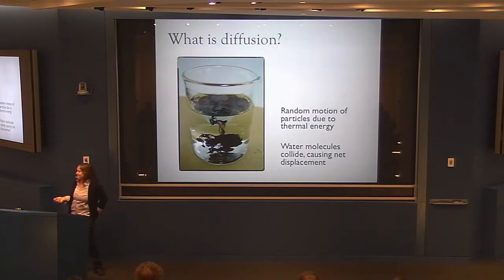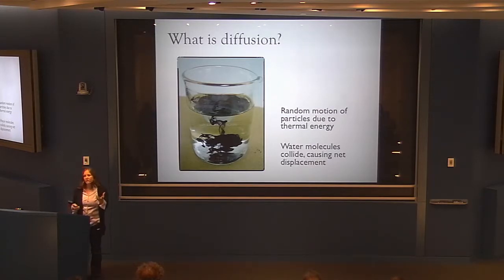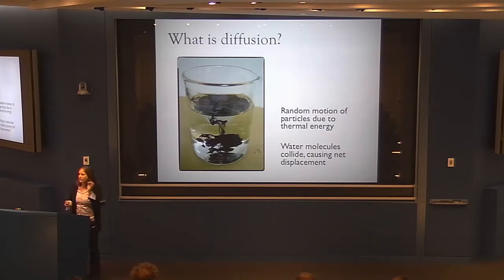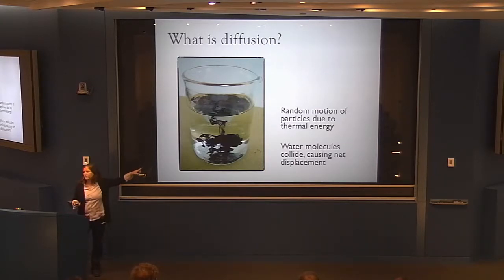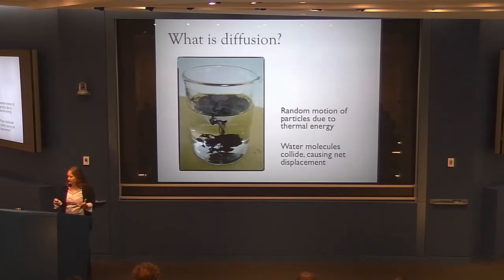We'll start with what is diffusion. Diffusion is just the random motion of particles due to thermal energy. Water molecules in a glass of water are constantly colliding with each other because they have heat, and that causes a net displacement. You can see this effect if you take a beaker of water and drop some ink into it — those chaotic streams of ink as it distributes throughout the water. That is the process of diffusion.